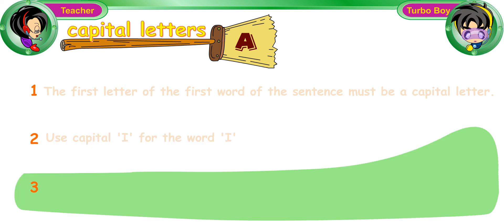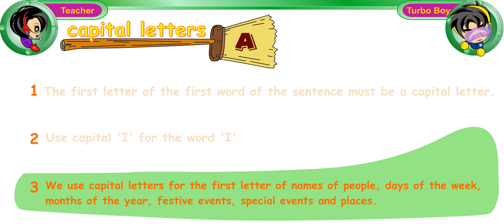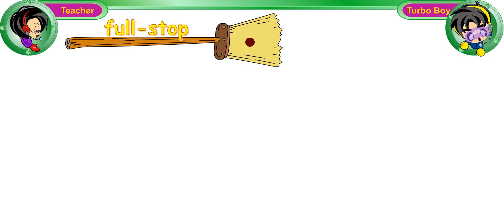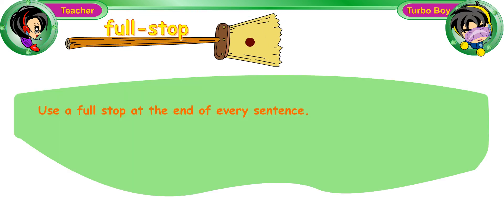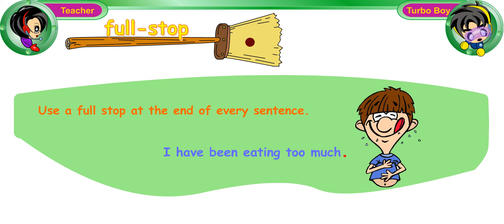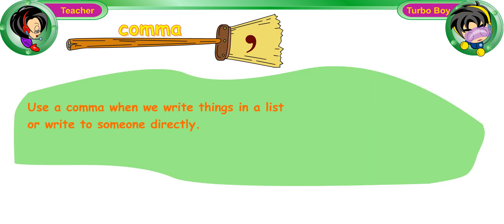Thirdly, the first letter of names of people, days of the week, months of the year, festive events, special events, and places must be in capital letters. Next, we learned that we always use a full stop at the end of every sentence. For example, 'I have been eating too much.' We use the comma when we write things in a list or write to someone directly.